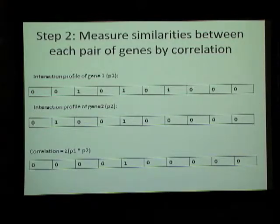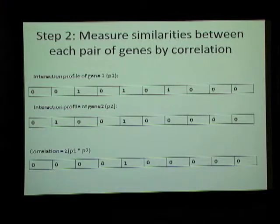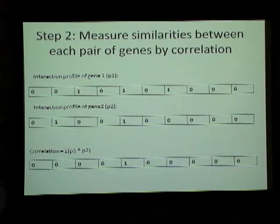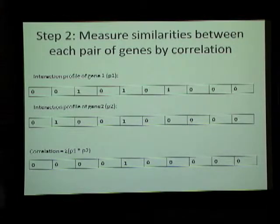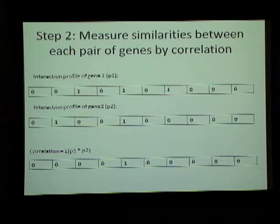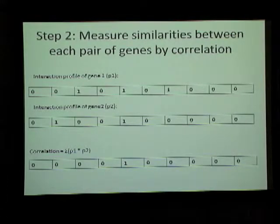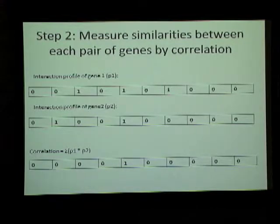Step two is to find out the similarity between genes using correlations. The interaction profile of gene one and gene two are compared by multiplying their corresponding values and adding them up. The correlation means that genes that are highly correlated are more similar and should be together in a cluster, while genes that are lowly correlated should be further apart because they have no similarities.